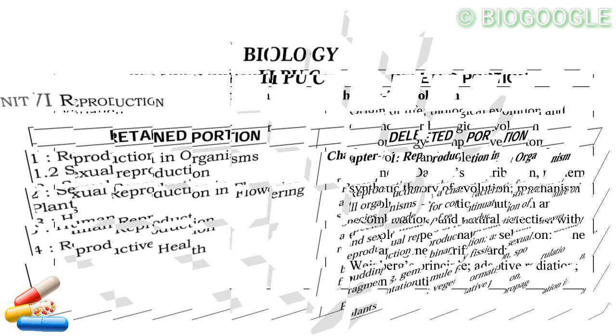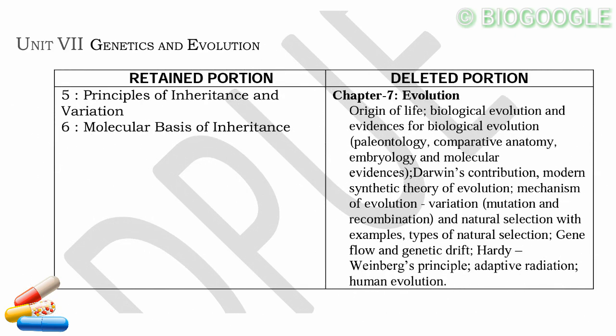Next chapter: Principles of Inheritance, Molecular Basis — 2 chapters. Then Evolution — the whole chapter is deleted. Asexual reproduction and Evolution are both complete and deleted.